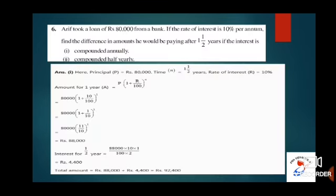That is problem number 6 of exercise 8.3. Question number 6: Arif took a loan of Rs. 80,000 from a bank. If the rate of interest is 10% per annum, find the difference in the amount he would be paying after 1.5 years if the interest is compounded annually versus compounded half yearly.